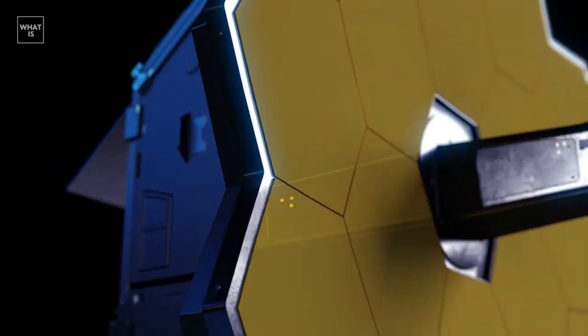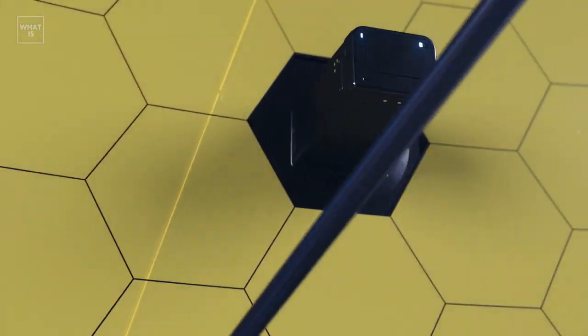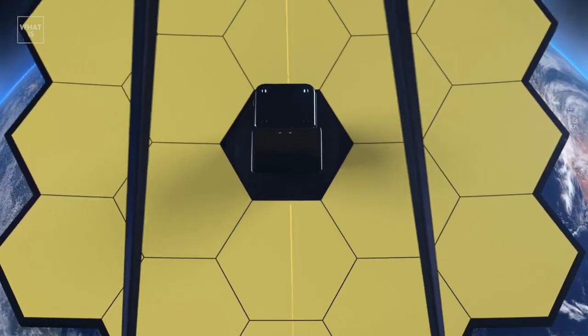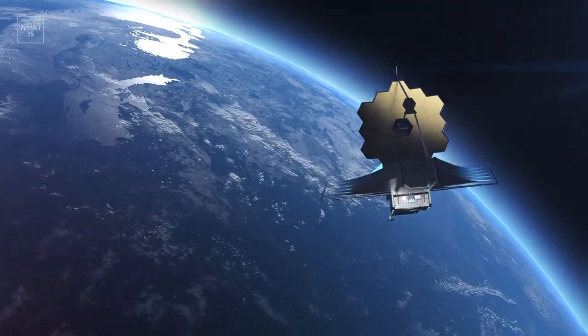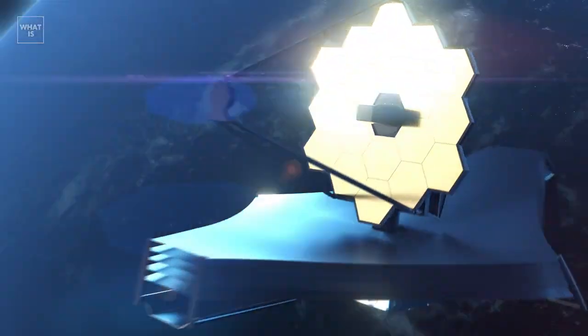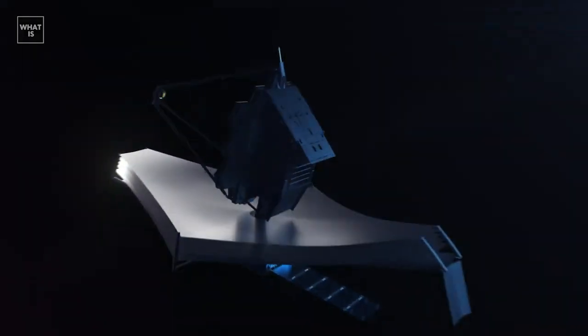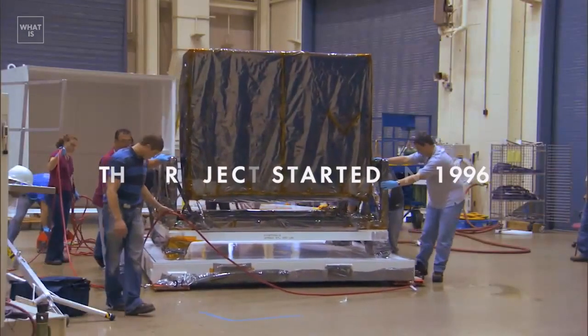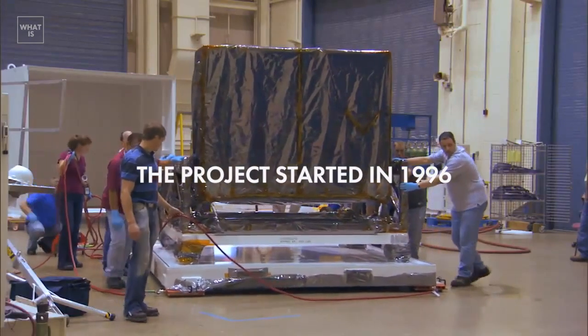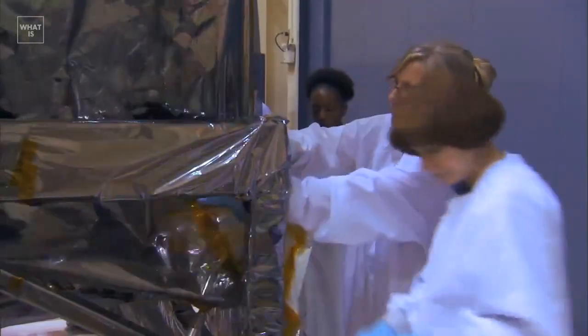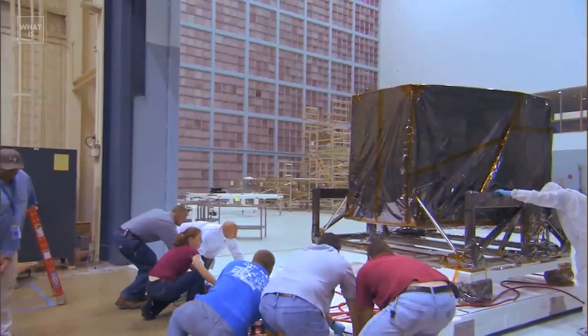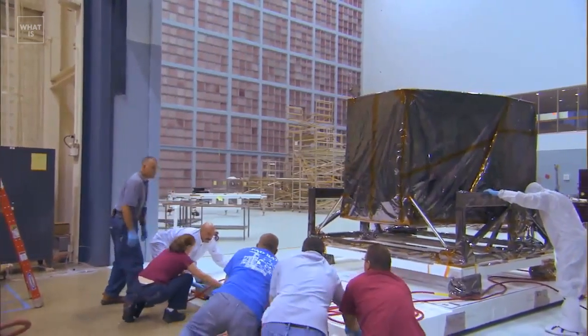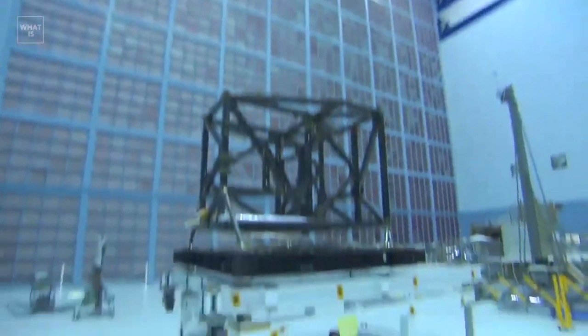The James Webb Space Telescope has several advantages that no other existing or soon-to-be ground-based or space-based telescopes can match. James Webb itself has become a real long-term construction project and has been under the threat of closure more than once. The project started in 1996 and cost $12 billion by the time it was launched. Such terms and costs are determined by the highest complexity of the device and the requirements for design accuracy.